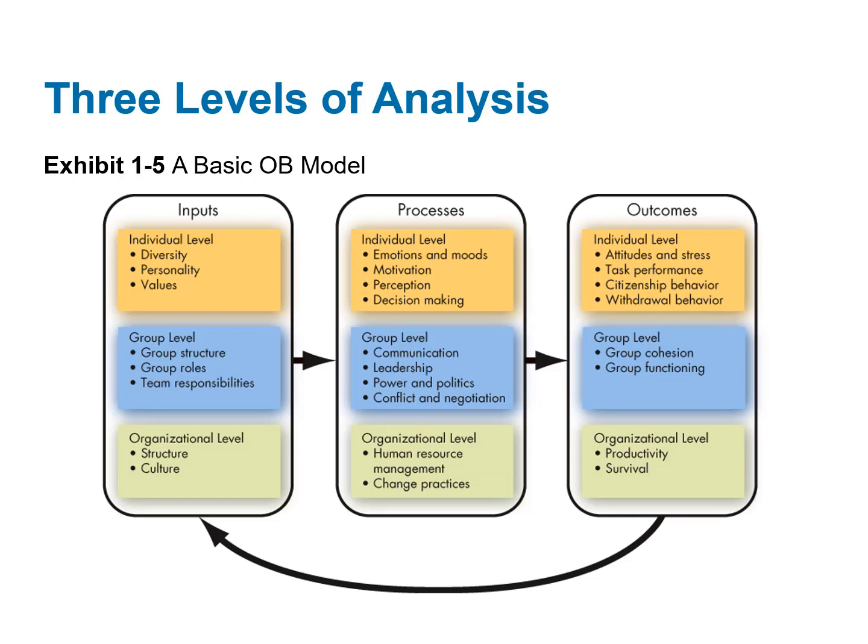Processes then lead to certain outcomes. For example, at the individual level, we might look at things like motivation, perception, and decision-making. At the group level, we would look at communication, leadership, power and politics, conflict and negotiation — the titles of the chapters in this book. Finally, at the organizational level, we would look at things like human resource management and change practices.